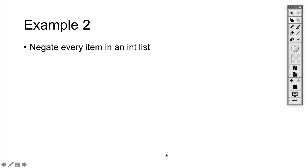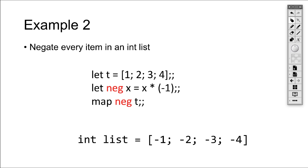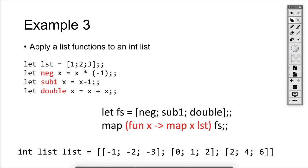Now let's look at another example: negate every item in the list. We have seen this example before. We create a neg function that takes an x, multiplies by minus one, and send the function neg as an argument to the map. The map applies this function to every member of the list, giving [-1, -2, -3, -4].